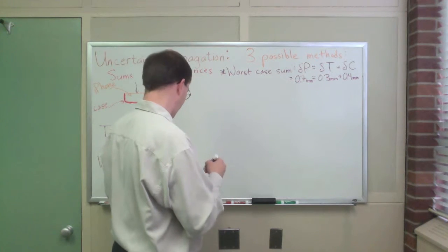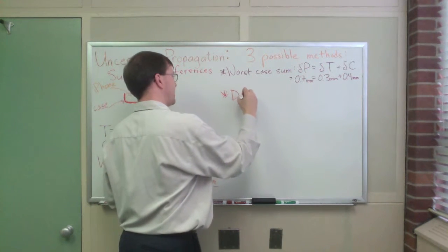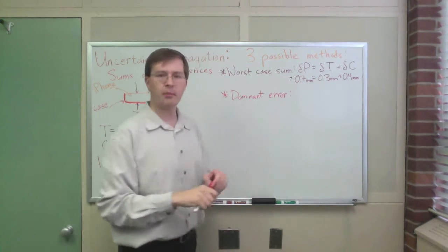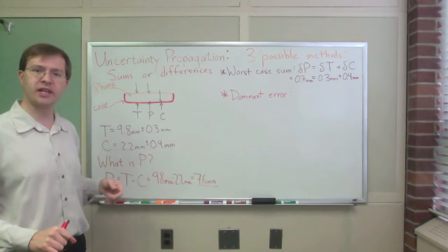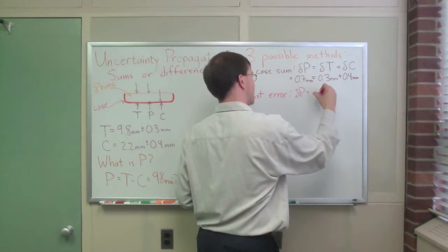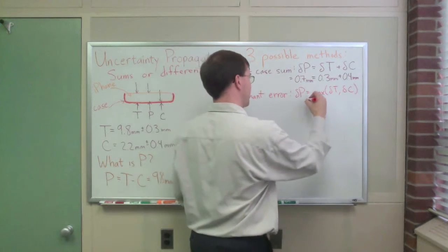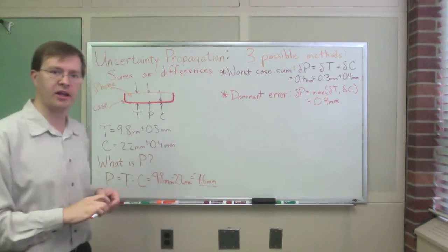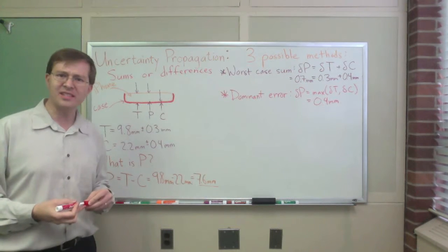What's the next method that we might take? Well, the next method is what we might call the dominant error method. Dominant error says, we're going to be, this is the easiest one. We're going to say, what's the biggest uncertainty I had? 0.4 millimeters. Okay, cool. Delta p equals the max of delta t and delta c, the uncertainty in each one of those. So I just say it is 0.4 millimeters. This is the idea behind the dominant error analysis is just saying, well, whichever one of these is biggest contributes the most. It's obvious this is going to be an underestimate.